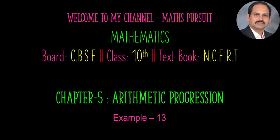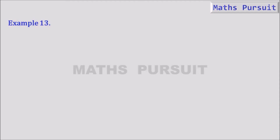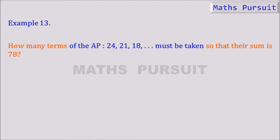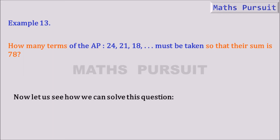Hello guys, welcome to my channel Maths Worksheet. Today we are going to look into Example 13 from Chapter 5, called Arithmetic Progression. Let's see what is given in Example 13. It is given: how many terms of the AP 24, 21, 18 must be taken so that their sum is 78. This question requires us to determine up to how many terms we need to add to get 78.